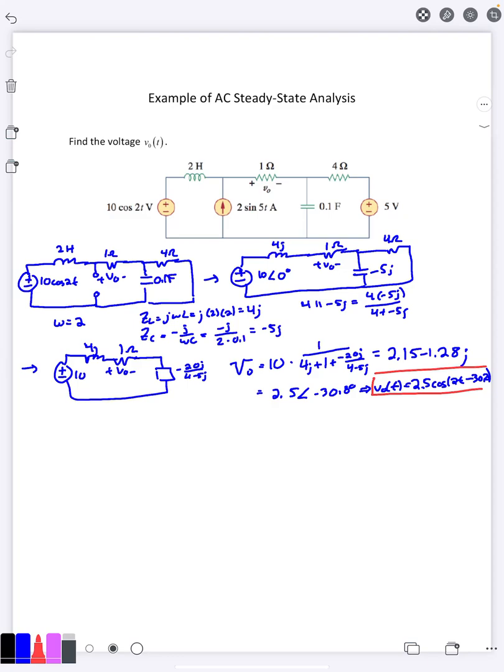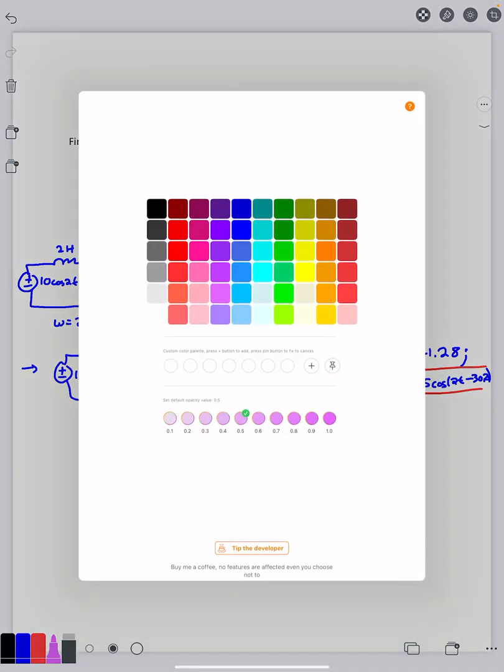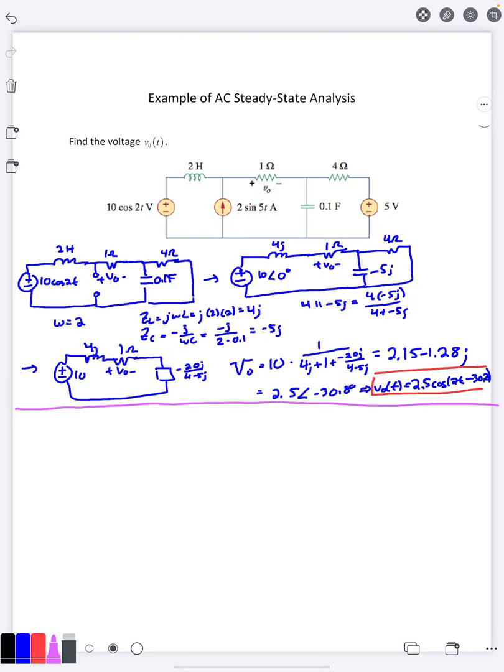And we do have to do these all separately because again different frequencies means different phasors, which means you can't combine the phasors together. Now I'm going to the next source. So this first source becomes a short. I have my inductor. Now this one is a sine. So it's going to be 2 angle negative 90 there.